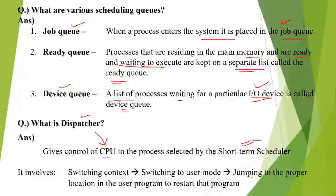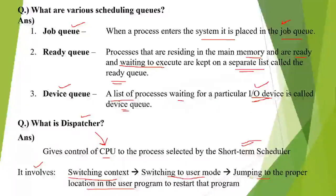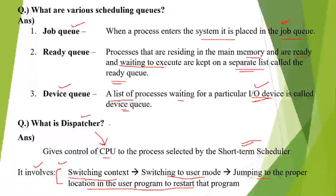The dispatcher moves the process to the CPU so it can be executed. The steps involved in this operation include context switching, switching to user mode, and jumping to the proper location in the user program to restart that program. So context switching of different processes is performed by the dispatcher, whose role is giving the CPU to the selected process.